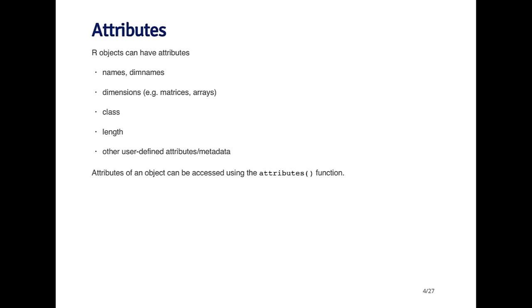Every object also has a length. For a vector, it's quite simple - the length is just the number of elements in the vector. There may be other user-defined attributes or metadata; these are things you can define separately for an object using various attribute functions. There is a general function called attributes() which allows you to set or modify the attributes for an R object.